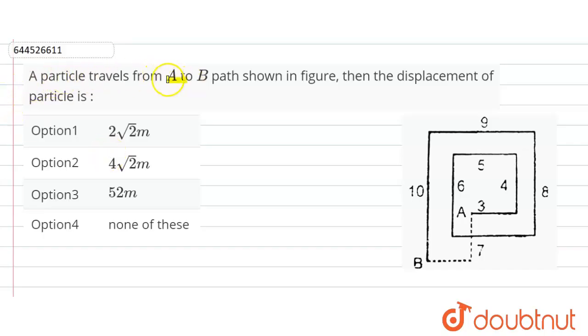A particle travels from A to B path shown in the figure, then the displacement of the particle. So this particle starts from point A and comes to point B. We have to find the displacement. We know displacement is the shortest path.